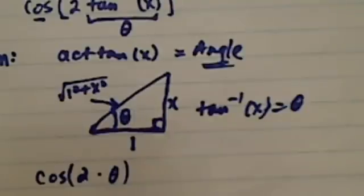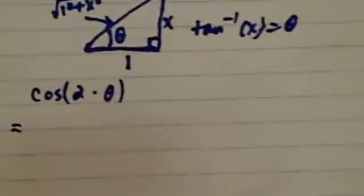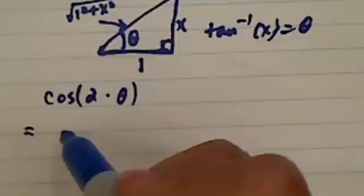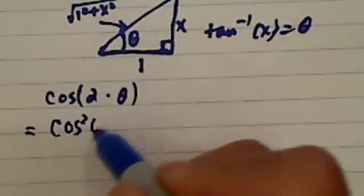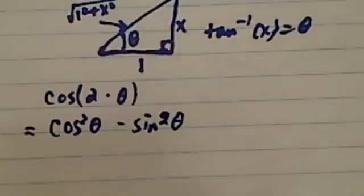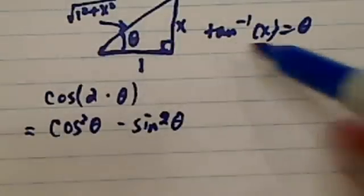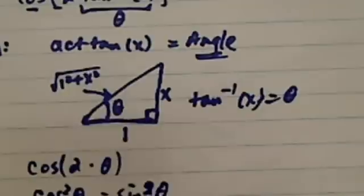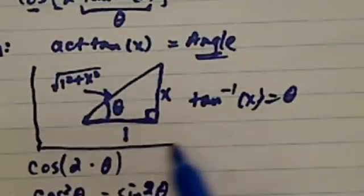Cosine of 2 theta has an identity with a couple of representations, but the one that you can use here is this one. There's a couple of other ones, but this one is sufficient. So from this triangle here, this triangle is a very important one. Let me see if I can put a box around it for us.